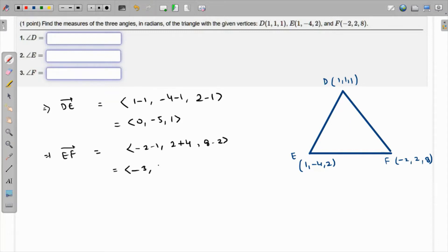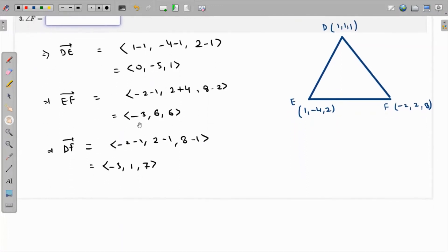Finally we have vector DF, which is -2 minus 1, 2 minus 1, and 8 minus 1, so this will be <-3, 1, 7>. We got all three vectors and now we can use the dot product to find the angles.